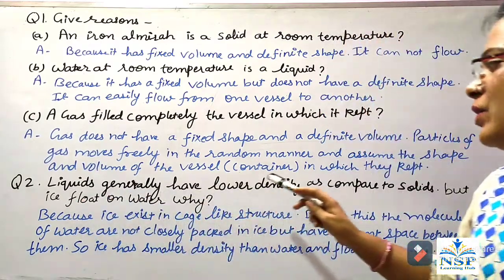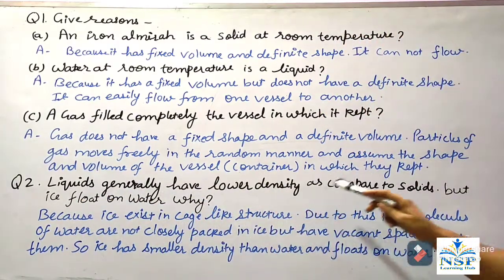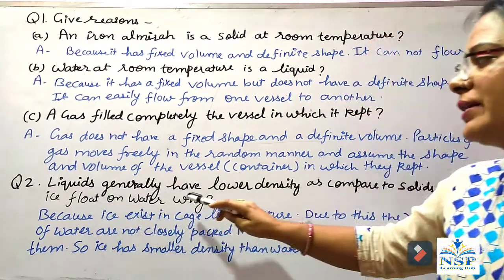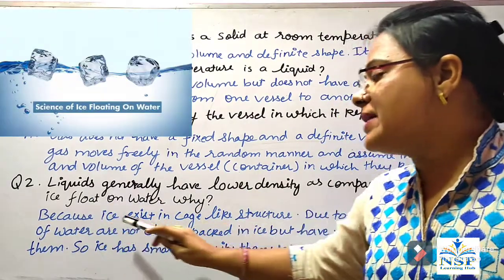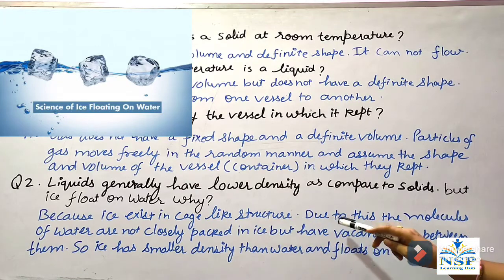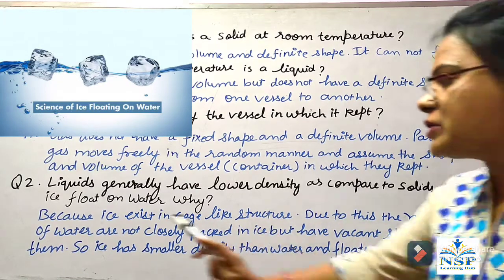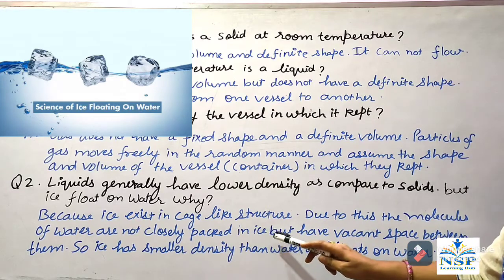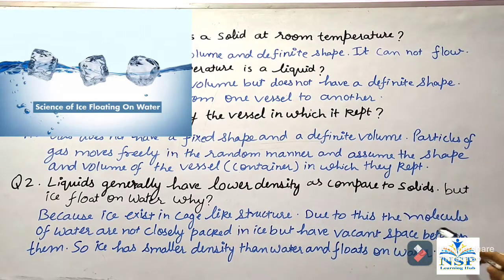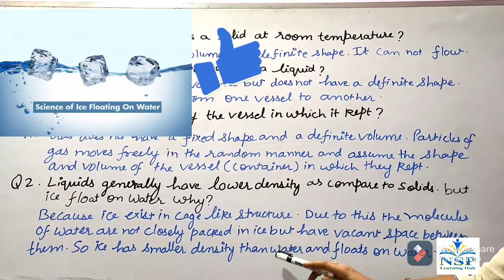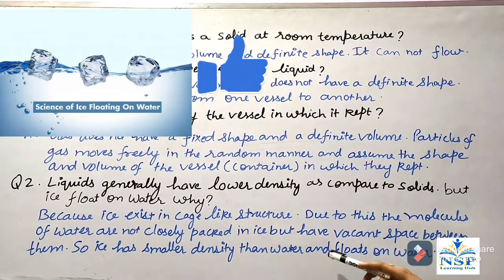Liquids generally have lower density as compared to solids. But ice floats on water — why? Because ice exists in a cage-like structure. Due to this, the molecules of water are not closely packed in ice but have vacant space between them. So ice has smaller density than water and floats on the water surface.